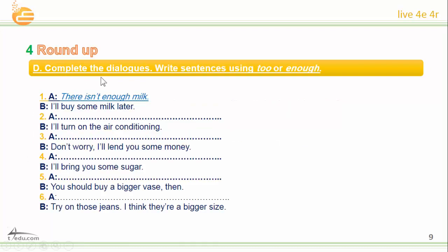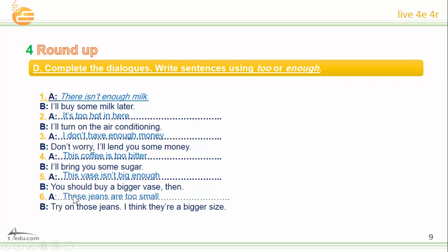Okay, let's go to D — complete the dialogues. Write sentences using 'too' or 'enough'. Let's start. Number two: 'It's too hot in here.' 'I'll turn on the air conditioning.' Number three: 'I don't have enough money.' 'Don't worry, I'll lend you some.' Number four: 'This coffee is too bitter.' 'I'll bring you some sugar.' Number five: 'This fridge isn't big enough.' 'You should buy a bigger one.' Number six: 'These jeans are too small.' 'Try on those jeans — I think they are a bigger size.'